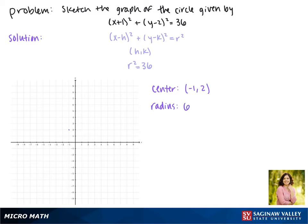So we'll graph our center point and then the points that are 6 units away. Now we can draw our circle, and this is the graph of our circle.